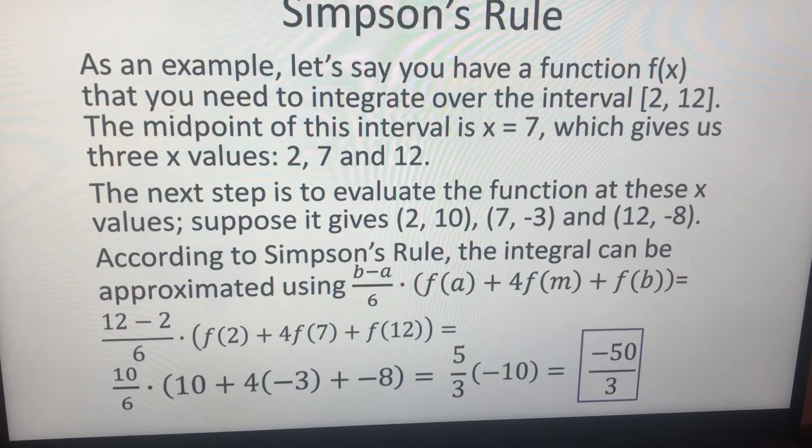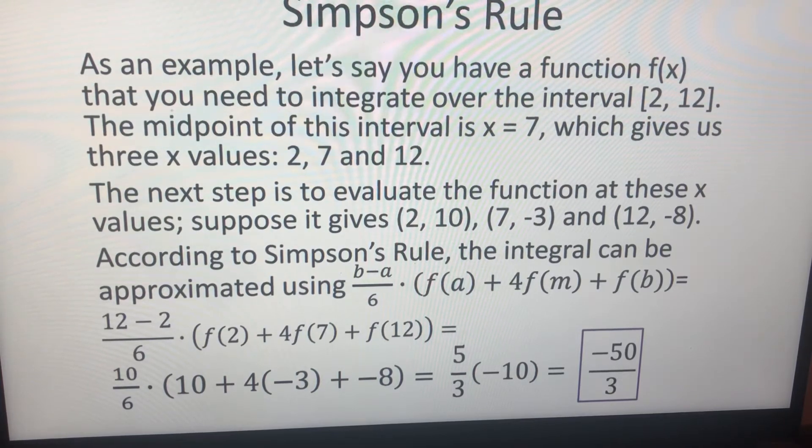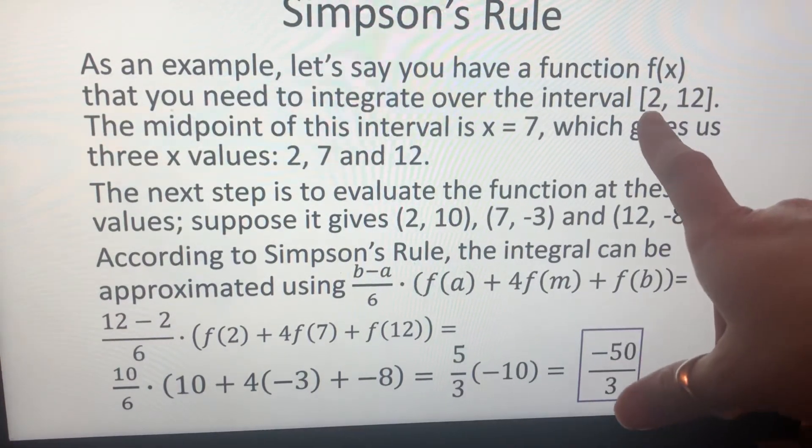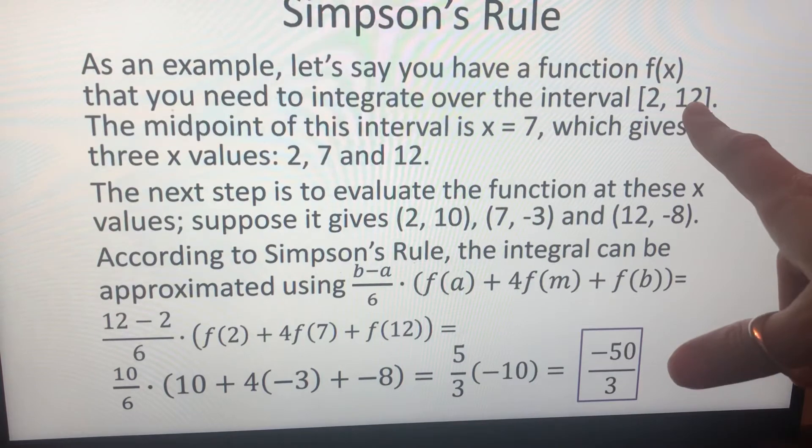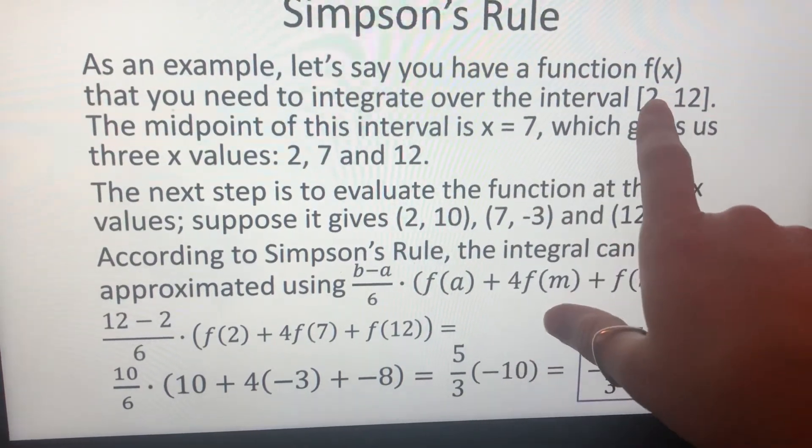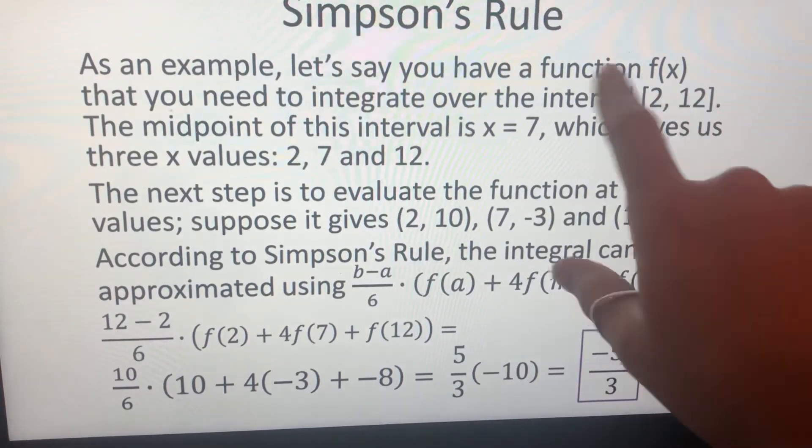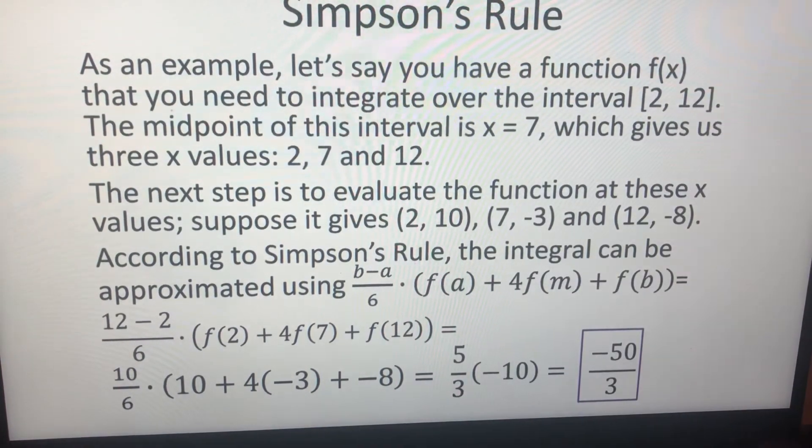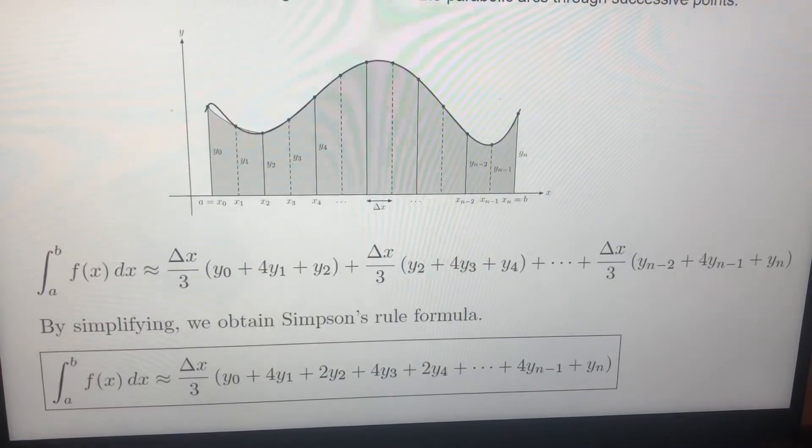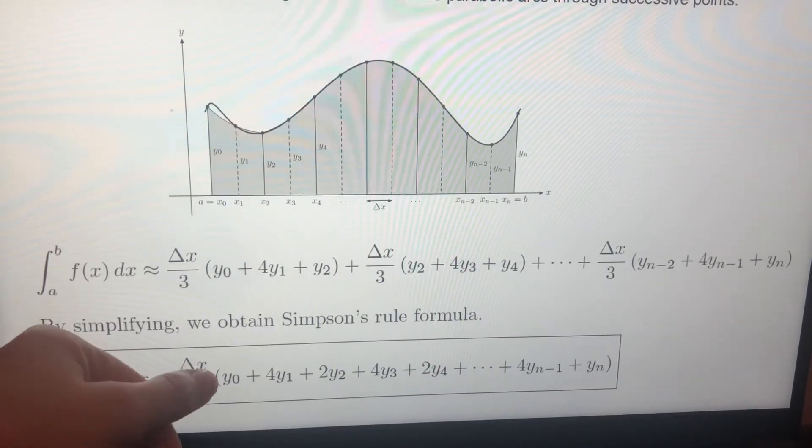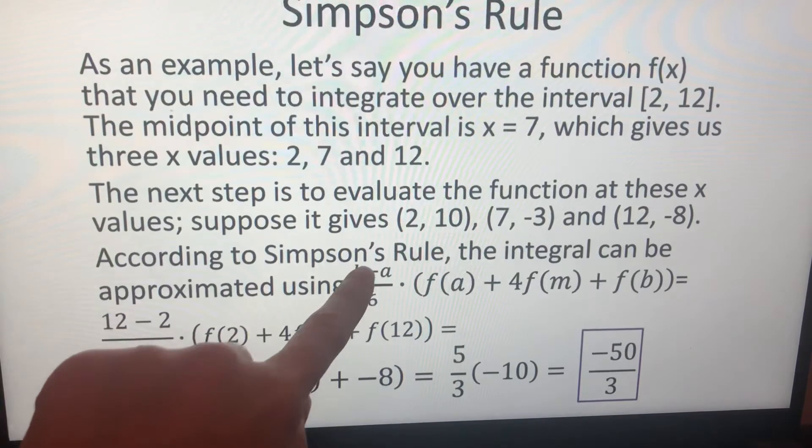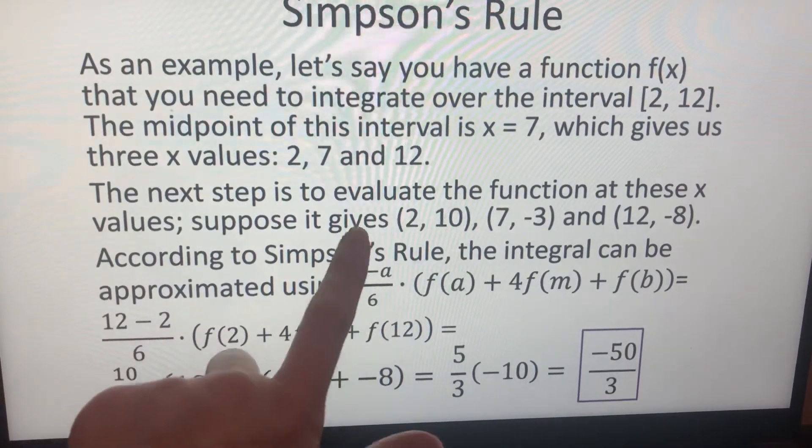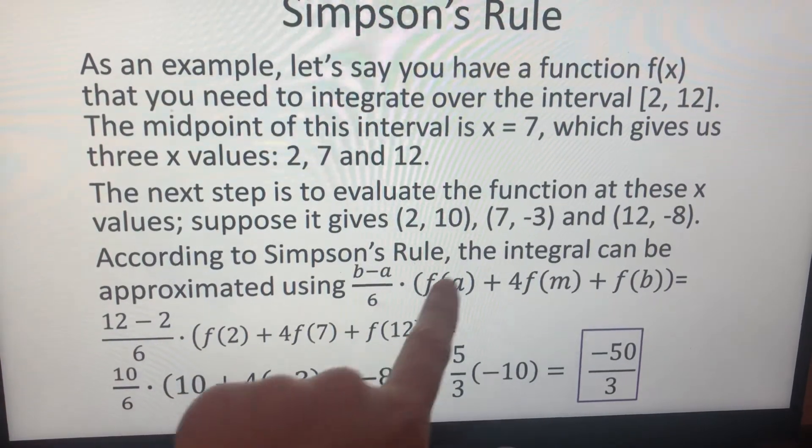And this is just one example for just three points. Let's say we have a function f of x, and we are taking the integral from 2 to 12. And let's take the midpoint. Seven is the midpoint between 2 and 12. So we have three points. What we were doing, the expression was delta x over three. Delta x is b minus a over two. That's why we have b minus a over two over three, which is six, b minus a over six, f of a.